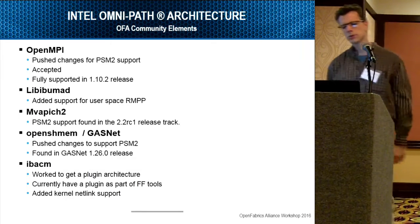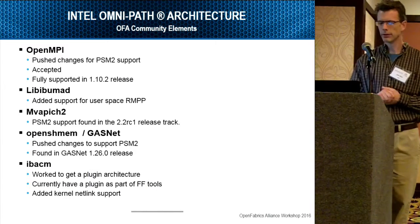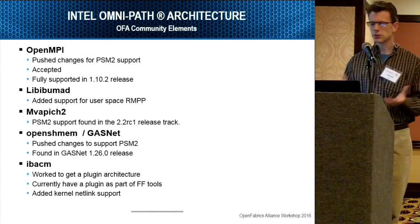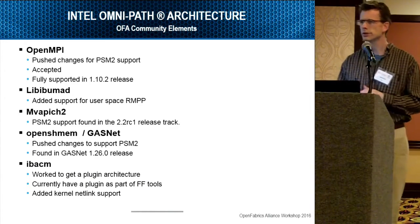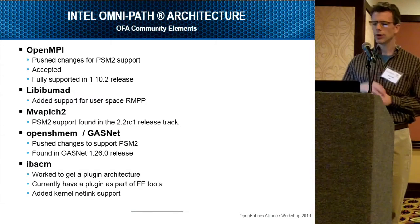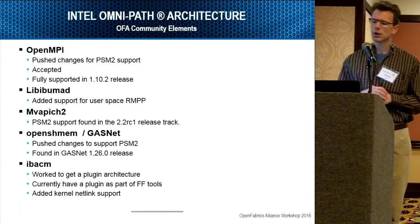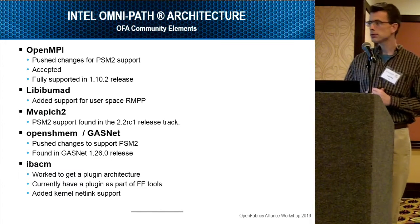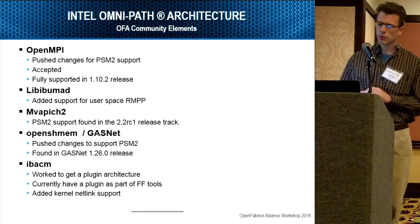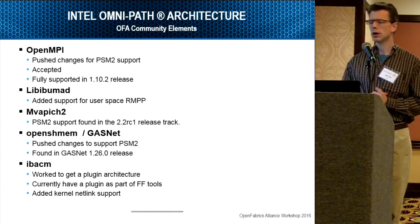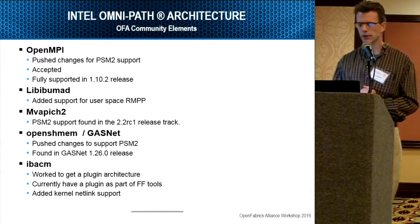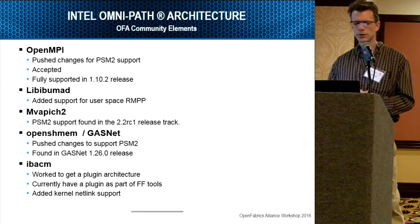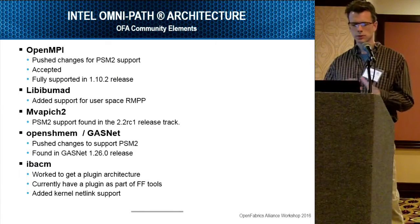Some of the other pieces we've enhanced for OmniPath — we've worked with the community to get our changes accepted. For OpenMPI, all our changes were accepted and are in the 1.10.2 release. For LibIB UMAD, we had some changes for RMPP messaging that were accepted upstream quite a while ago. MVAPICH2, as we heard from Dr. Panda, will be supported in the 2.2 RC1 release with everything needed to run on OmniPath. We also had customers interested in OpenSHMEM and GasNet — we pushed our changes into GasNet in the 1.26.0 release, so we're fully supported there.